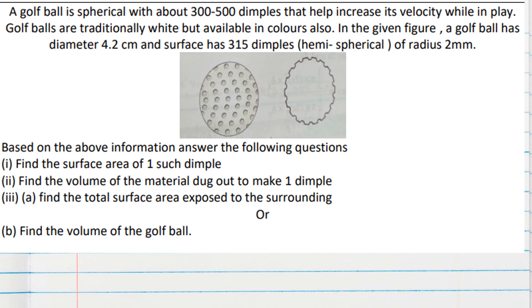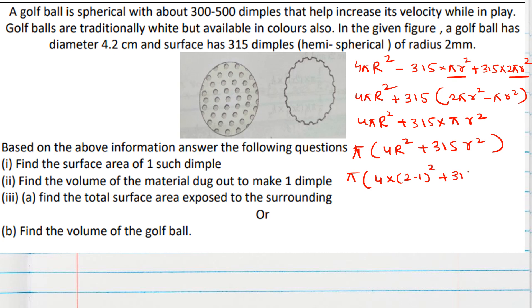From the previous step we have 4πr². 4πr² and minus 315πr² plus 315 into 2πr². So we can take 315 common: 2πr² minus πr² will give πr² only. So now π also we can take common. Then it will be easy: 4r² plus 315r². So 4 into r² means 2.1². Now here we have to check, because this diameter is given in centimeter. This has to be also in centimeter. So we will take 2 by 10, 0.2². 22 by 7.